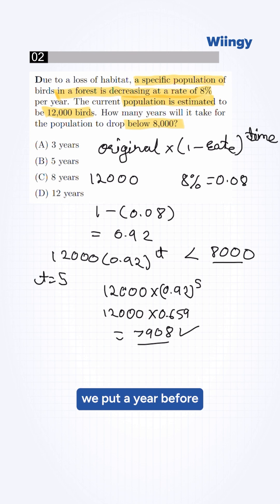So to verify, we put a year before, which is t equals 4. 12,000 times 0.92 raised to 4 is 8596. This is still above 8,000.